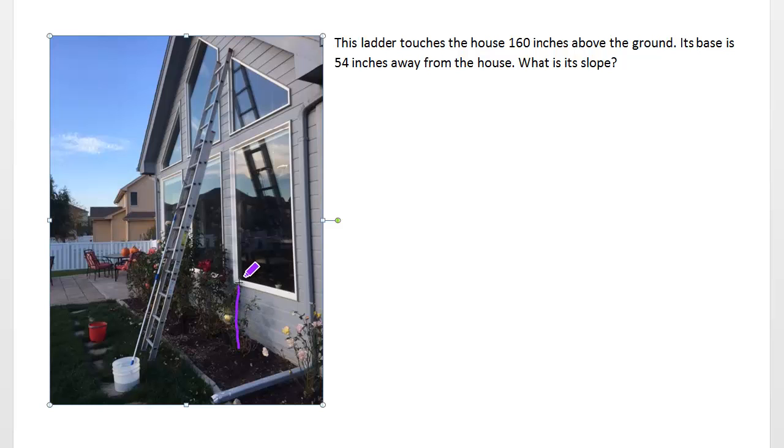Here we have a ladder that extends up the house 160 inches, and its base is 54 inches away from the house. What is its slope? Slope is rise over run, we're rising 160, we are running 54. That reduces to 80 over 27. So that's our slope.